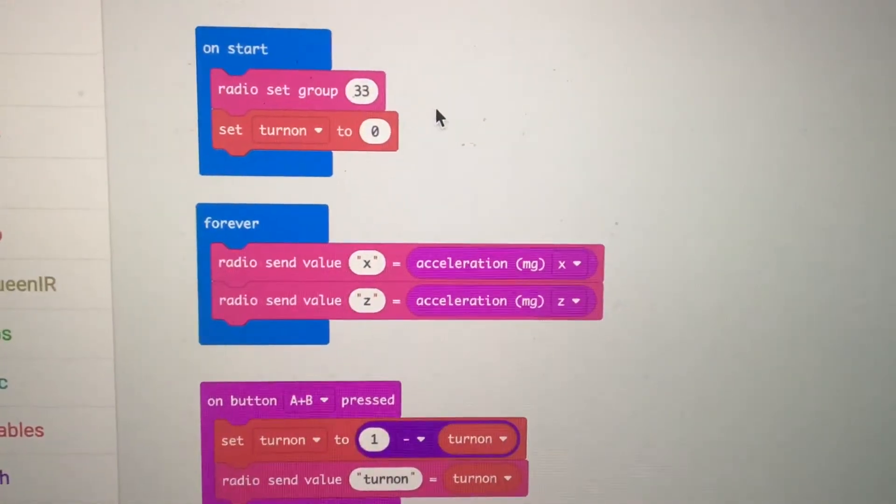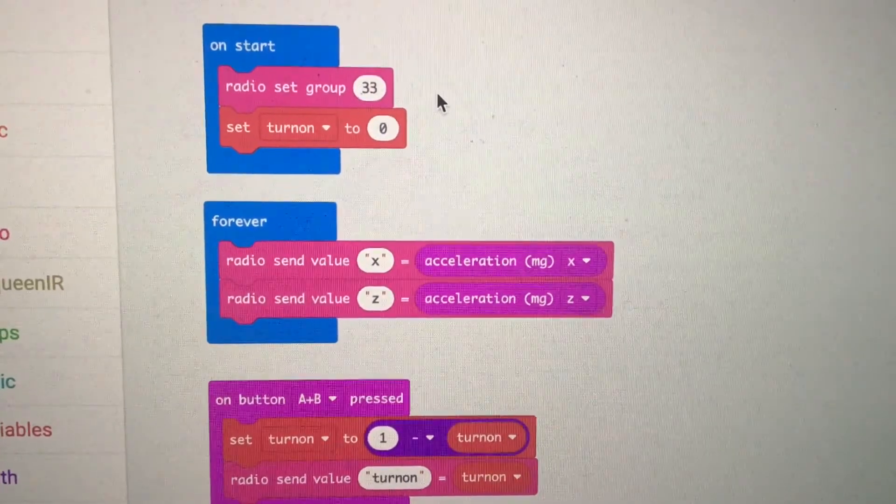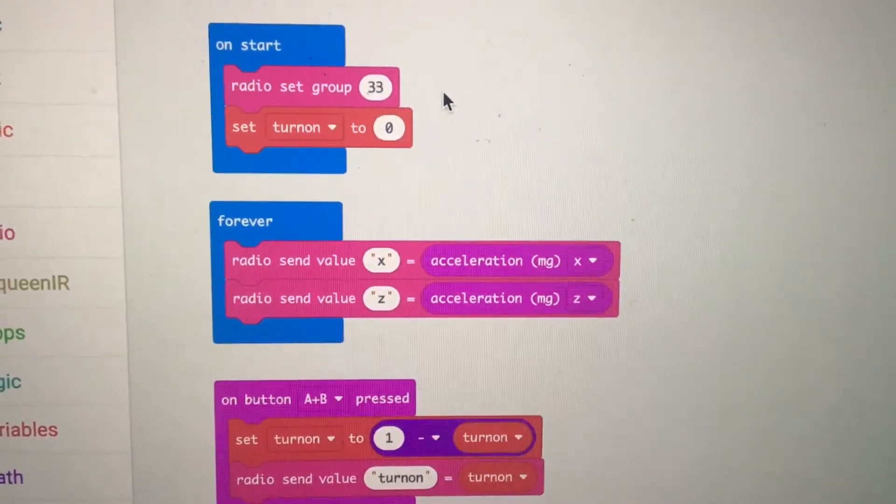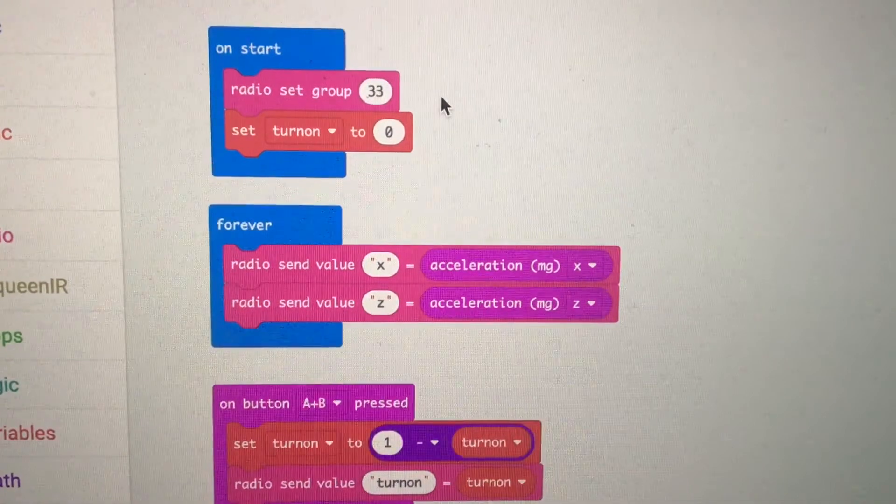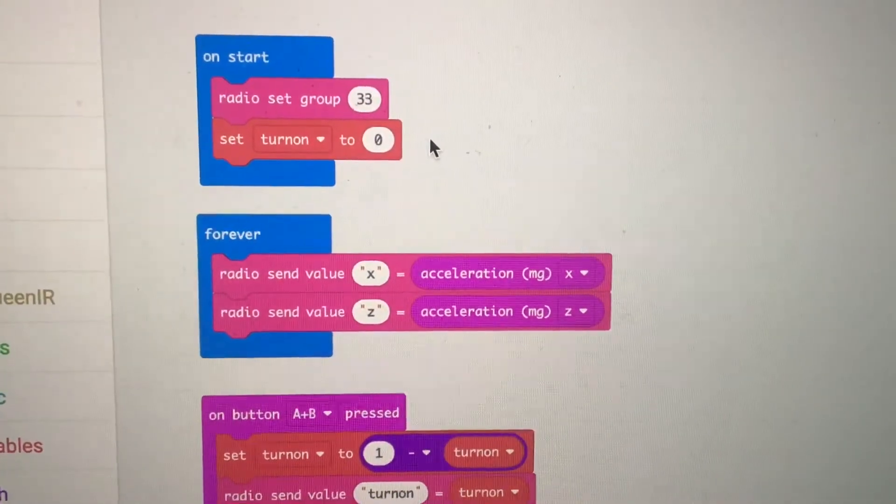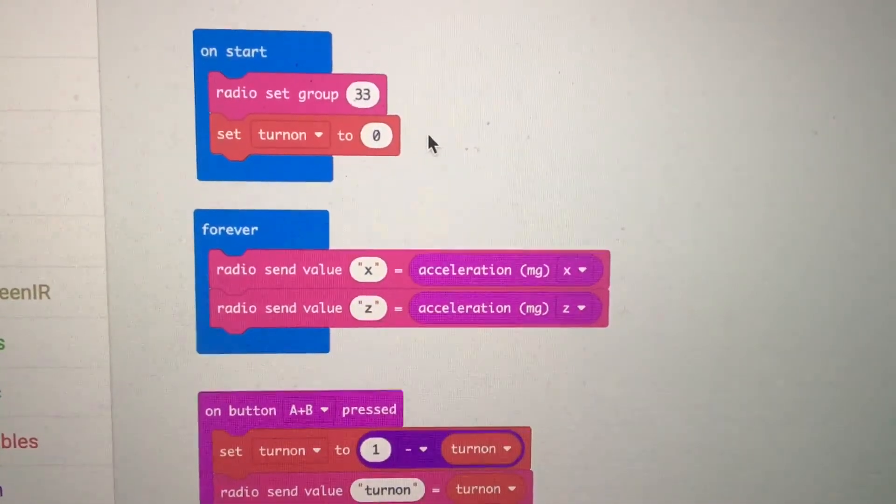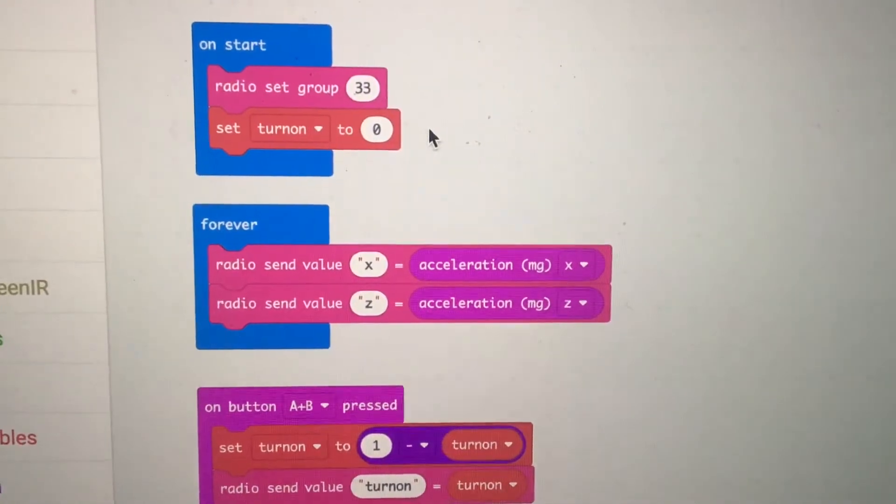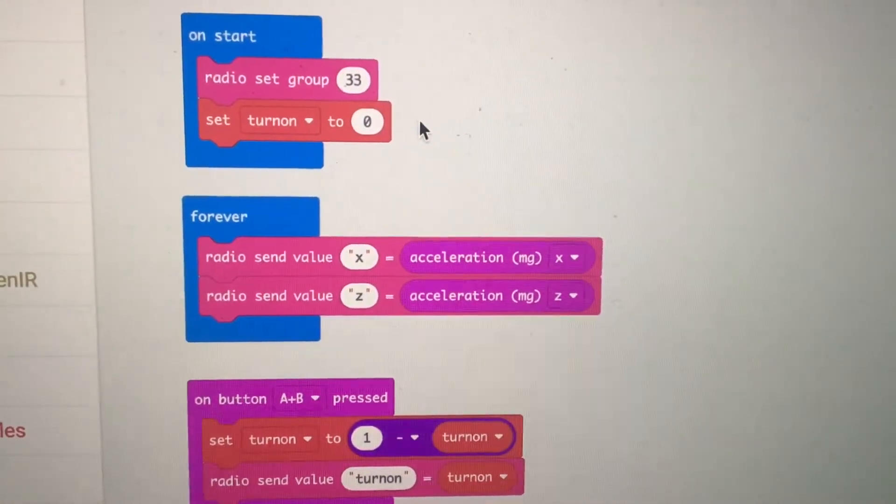This is the start routine. First I chose the Bluetooth channel to transmit and receive on. I chose number 33. Then I created a variable called turn on to tell the car to turn on or off. And I start with zero which is off.